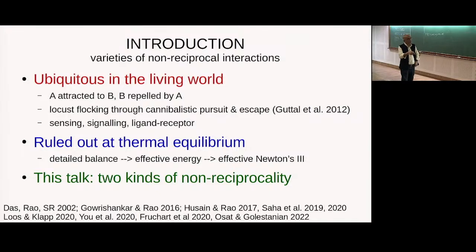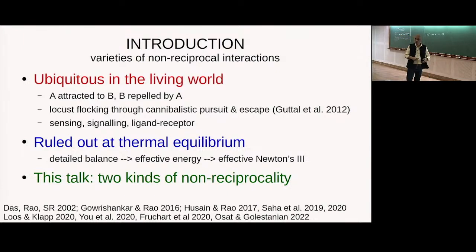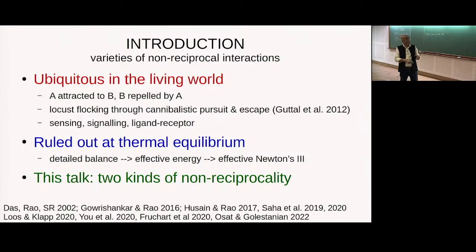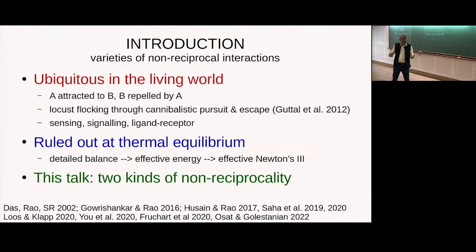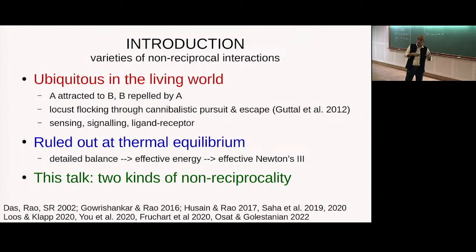Even if you're not talking about a pair of objects interacting in complete isolation, systems with detailed balance always have interactions governed by an effective energy function and therefore Newton's third law operating between the effective degrees of freedom. So I'll talk about two kinds of non-reciprocality.